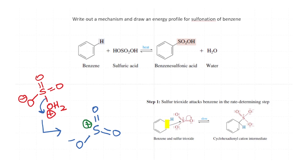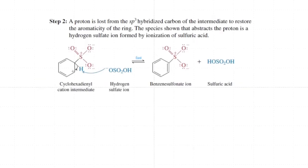Once electrophilic aromatic substitution can occur on the benzene ring, this is an equilibrium process and it gives a cationic intermediate. In the next step, there is a loss of H⁺ mediated by the hydrogen sulfate ion, which is the conjugate base of sulfuric acid, giving benzene sulfate ion and sulfuric acid.